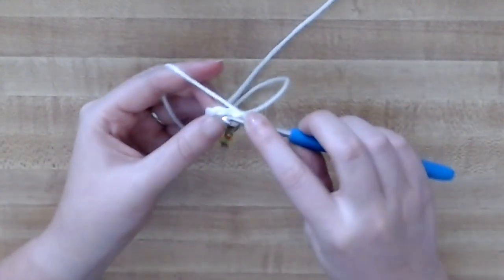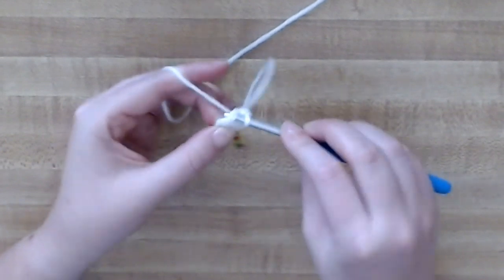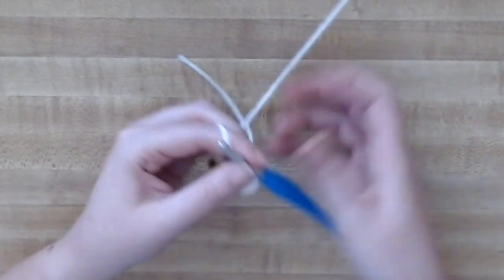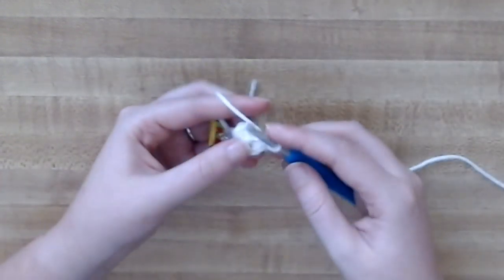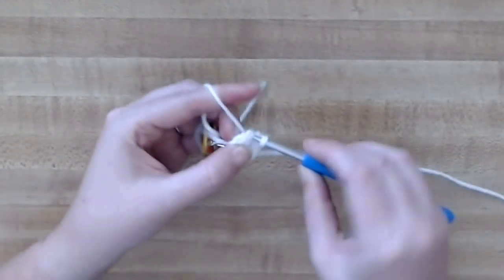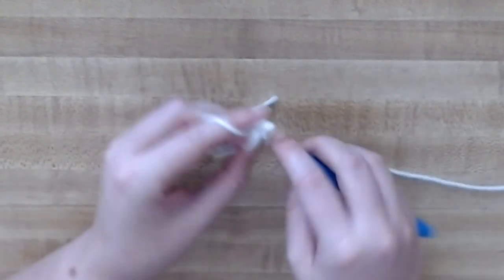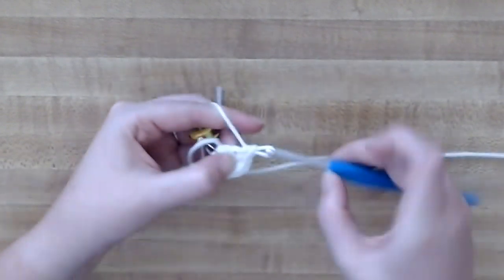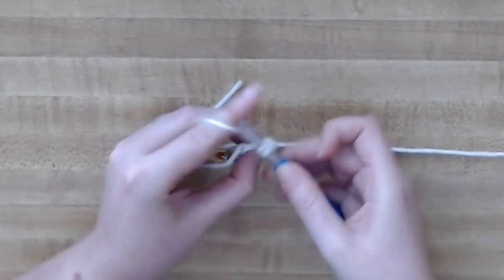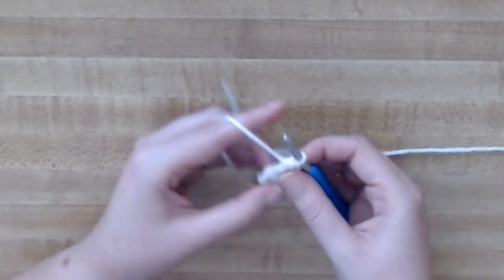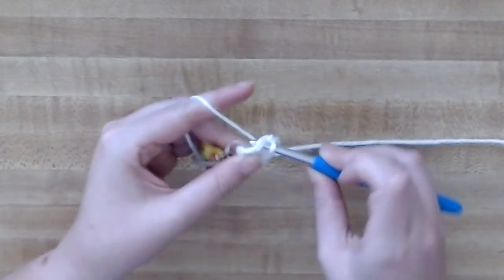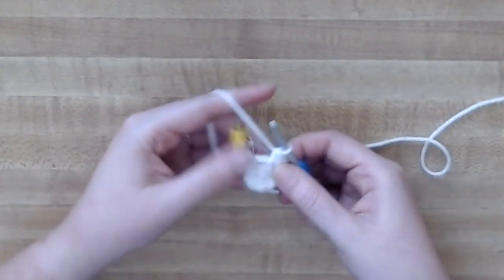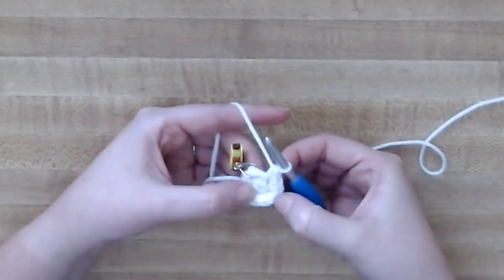Now continue to increase in every stitch all the way around, so in each stitch you put two single crochets. At the end of this round you'll have 10 single crochets. I always like to double count just to make sure I have the right amount of stitches.